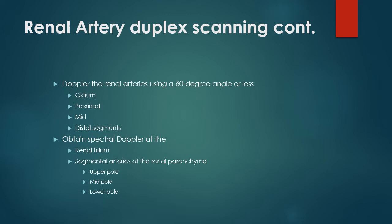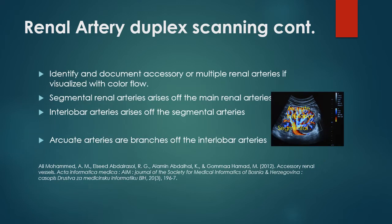Obtain spectral doppler at the renal hilum and the segmental arteries in the upper, mid, and lower poles of the renal parenchyma. Segmental renal arteries arise off the main renal arteries. Interlobar arteries arise off the segmental arteries. And the arcuate arteries are branches of the interlobar arteries. Identify and document accessory or multiple renal arteries if visualized with color flow.